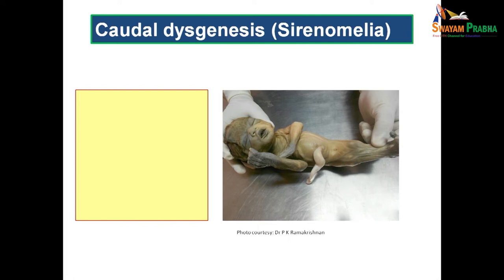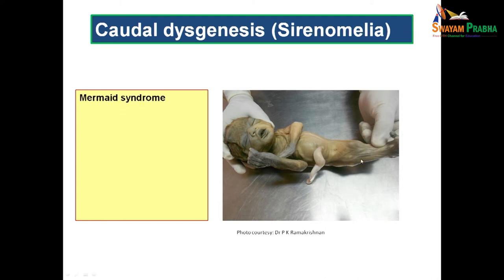This is known as caudal dysgenesis or sirenomelia. When you look at the fetus, you can see that the lower limbs are not properly formed. The lower limbs are fused and it looks like the tail of a mermaid. Hence, this is known as mermaid syndrome.